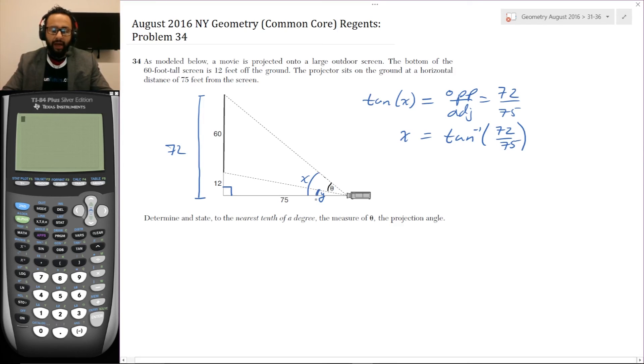Now this angle Y, so this angle Y is part of this red triangle, which has a side opposite 12 and that side adjacent which is also 75. So tan of Y is opposite over adjacent, which is equal to 12 over 75. So how do we get Y out of it? We go Y equals tan inverse of 12 over 75.